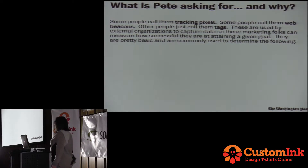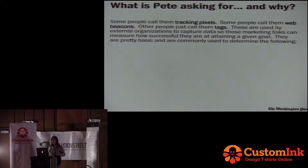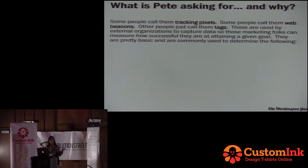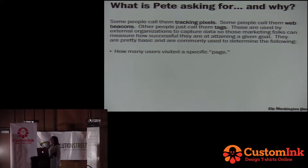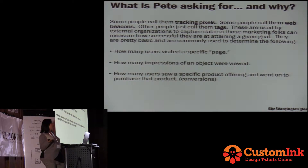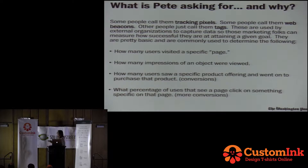So what's Pete asking for, and why? Why is Pete going to drive Chris crazy with this? What he needs is data. He's got some campaign running and he's promoting his website on Twitter. He's selling some products and he wants to know how many people are going to buy them and how many people went through this flow. Some people want to know how many users visit a specific page, how many impressions were viewed, and what percentage of users that see an offer for a product actually go through and buy it, and what percentage of users click on something that they saw.